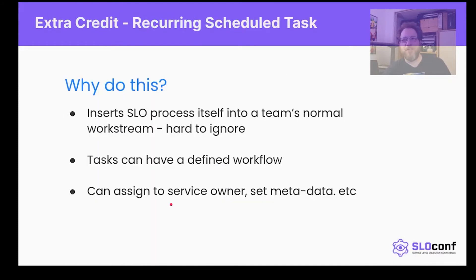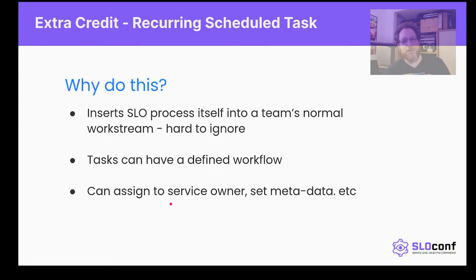Let's take it one step further with an extra credit task: we're going to create a recurring task that helps enforce this revisit date. We're doing this instead of just the calendar because we want to insert this SLO process into a team's normal work stream so it's harder to ignore. It's easy to re-reshuffle a calendar event — there's no audit trail. This creates a distinct audit trail and an immovable object that people have to deal with.